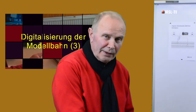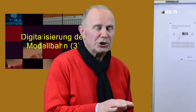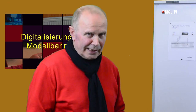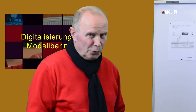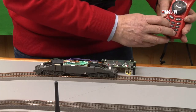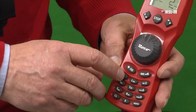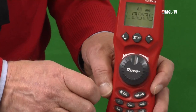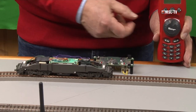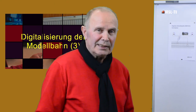Der Modellbahner wird als erste Amtshandlung, nachdem er die Adresse geändert hat, CV 2 aufrufen und dort den Wert 1 schreiben – das ist der niedrigstmögliche Wert. Wir gehen Menü und 2, kriegen den Wert 20 angezeigt, gehen auf 1, sagen OK. Jetzt sehen wir die langsamstmögliche Anfahrgeschwindigkeit eingestellt in der CV 2.